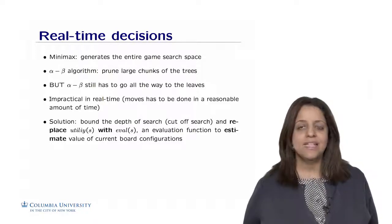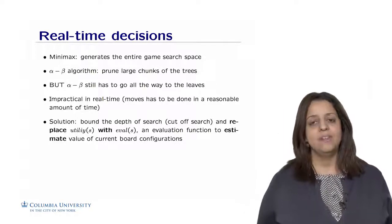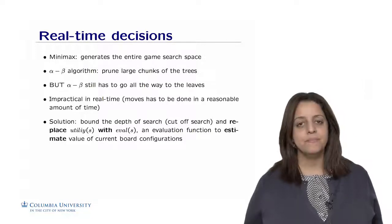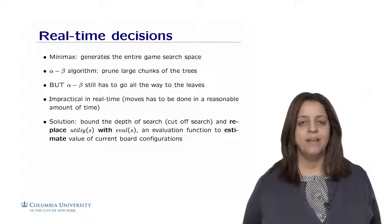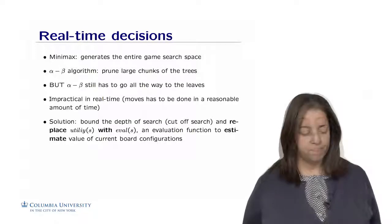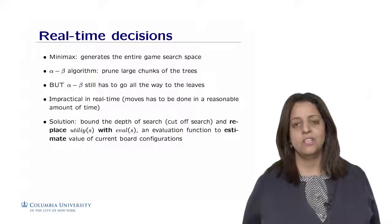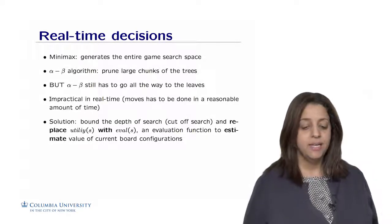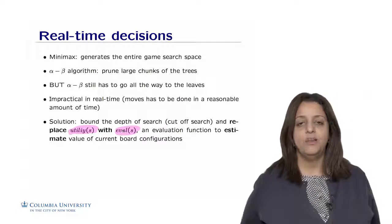However, minimax still needs to generate the entire game search space to search in it. Alpha-beta algorithm, in the best case scenario, reached double the depth of minimax, but still needs to go all the way down to the leaves, which is actually impractical in real-time games in which we have to move in a reasonable amount of time. The solution to that would be to bound the depth of the search by doing a cutoff search as suggested by Shannon in 1949.